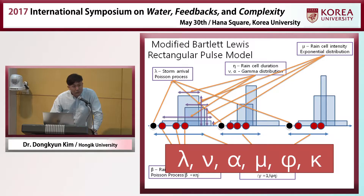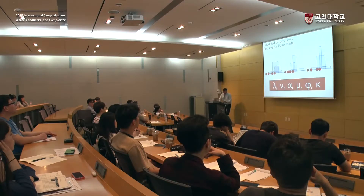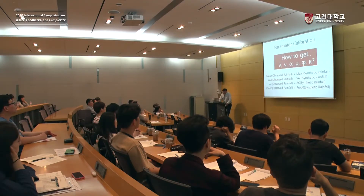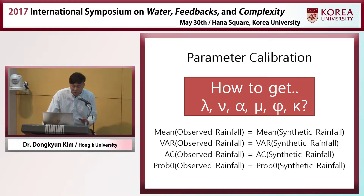There are six parameters needed to run this model. If we have these six numbers and give them to the model, it will generate a rainfall time series of infinite length. The next question is: how do we determine these six parameter values, which determine the regularity and randomness of the rainfall phenomena?